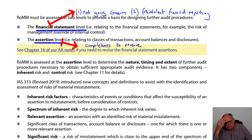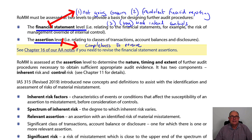Financial statement level risk can also be caused by very weak internal controls. You may have a family member who runs a little business and doesn't keep any records whatsoever — their accountant must have a nightmare with just no records.